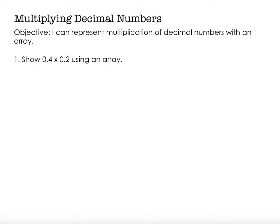An array is just an organized way of displaying objects, things, or numbers. Show four tenths times two tenths using an array. So I'm going to think about this as being four groups of two for now. And I'm going to show four groups of two.